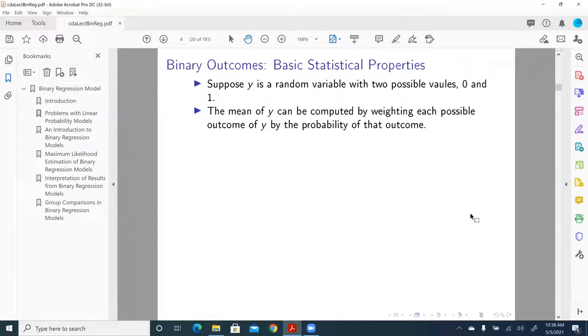Let me talk about some basic statistical properties of binary outcomes or binary response variables. Suppose y is a random variable with two possible values, 0 and 1.